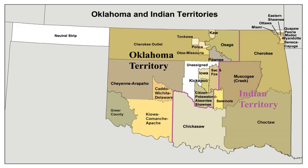Before the 1871 Indian Appropriations Act, much of what was called Indian Territory was a large area in the central part of the United States whose boundaries were set by treaties between the U.S. government and various indigenous tribes. After 1871, the federal government dealt with Indian tribes through statute. The 1871 Indian Appropriations Act also stated that no Indian nation or tribe within the territory of the United States shall be acknowledged or recognized as an independent nation. The Act also made it a federal crime to commit murder, manslaughter, rape, assault with intent to kill, arson, burglary, and larceny within any territory of the United States.